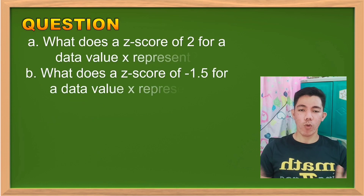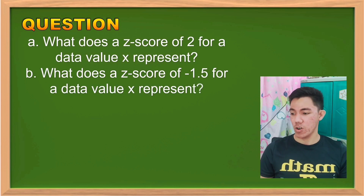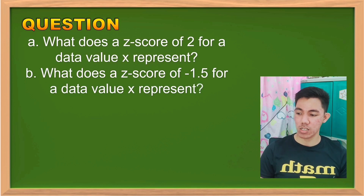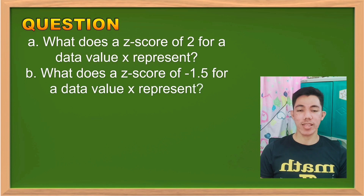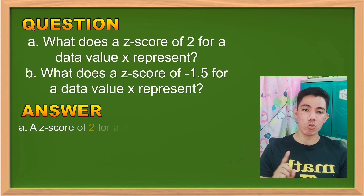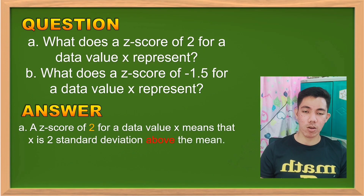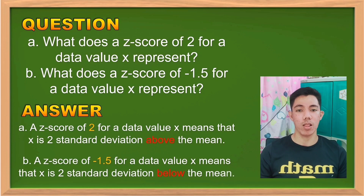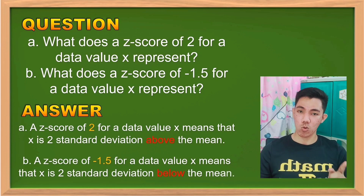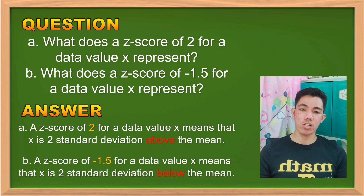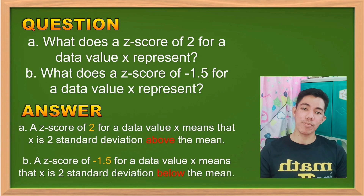So gets na ba? Question: what does a Z-score of 2 for a data value X represent? And then another question: what does a Z-score of negative 1.5 for a data value X represent? Since ang 2 ay positive, it means to say na yung 2 that is above the mean. Take note: positive means above the mean. Kapag negative naman, so we have the negative 1.5 — that is below the mean. So which is better? That is the 2, kasi siya ay positive. Ganun lang ang Z-score — kapag meron na siyang given na mean at standard deviation, substitute mo lang sa given formula, and then malalaman mo na kung above the mean siya or below the mean.